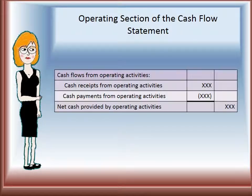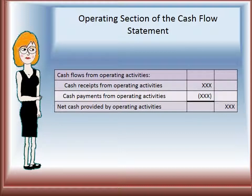The operating section is the first section of the cash flow statement. We have cash flows from operating activities. We'll have cash receipts from operating activities, and cash payments will be subtracted from operating activities, so you will get net cash provided by operating activities. That will go in the right-hand column, and any subtotals go one column over.